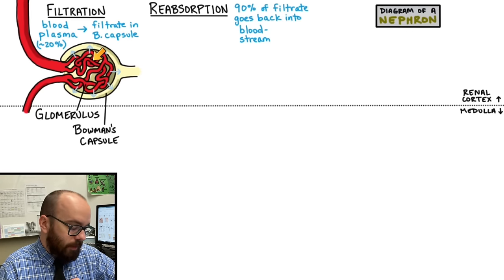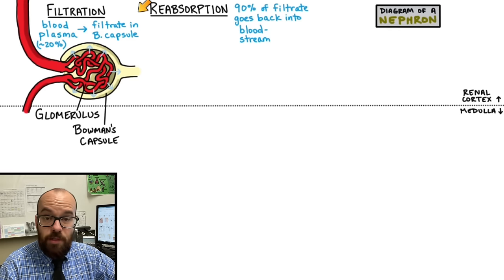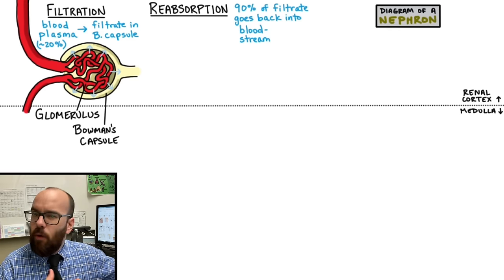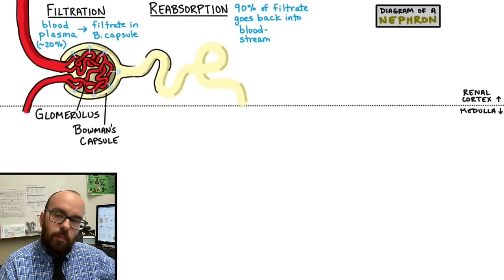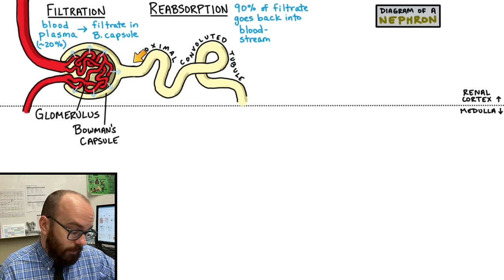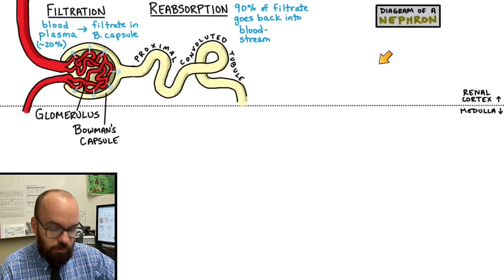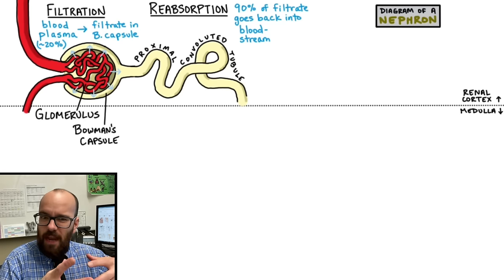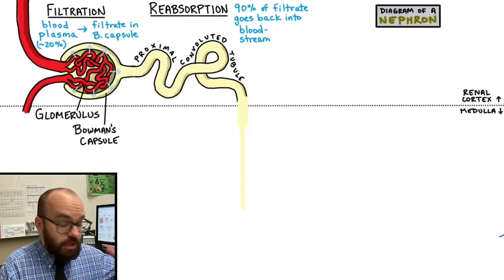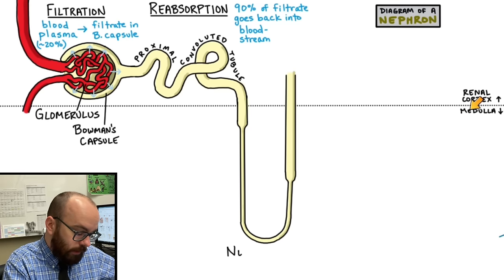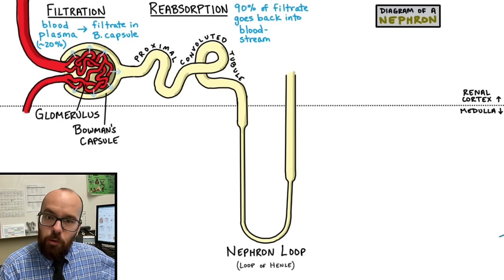Filtration takes place in the Bowman's capsule and glomerulus, and reabsorption takes place through the whole rest of the nephron. The filtrate first goes through the proximal convoluted tubule — proximal because it's right after the Bowman's capsule, convoluted because it meanders rather than going straight. Once it reaches the end of the proximal convoluted tubule, it descends down into the medulla in what we call the nephron loop, or sometimes called the loop of Henle.